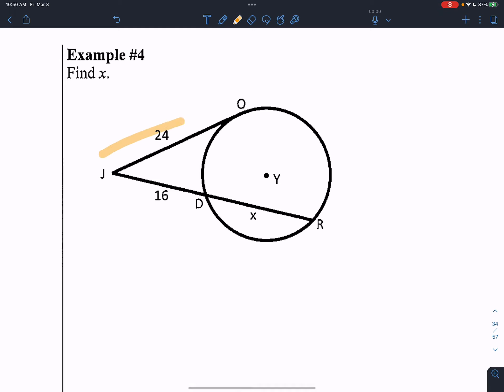The whole thing is 24, and the part is 24. Times those together, set them equal to the whole thing over here is 16 plus X. Multiply that by just the outside part, which is 16.